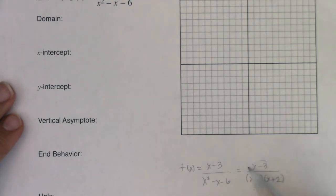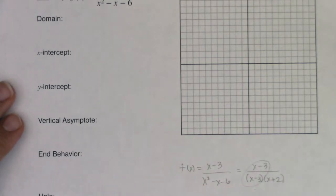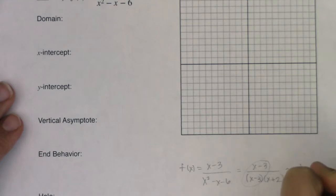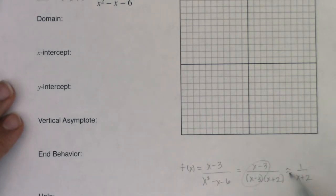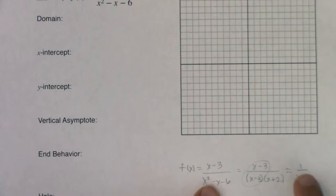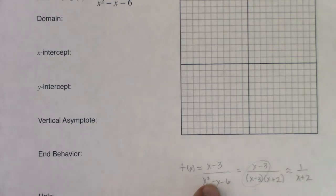I want you to see something happening for the first time in this example: this is the first time we have a factor common to both the numerator and denominator. I haven't given you an example like that before. If I were to divide these out, I would basically have 1 over (x plus 2). My original function behaves just like 1 over (x plus 2). If I were to graph that — we've graphed the reciprocal function before — I could shift it left by 2 units.